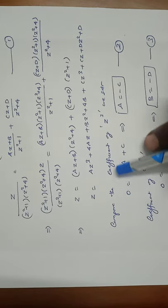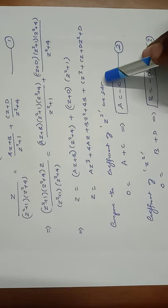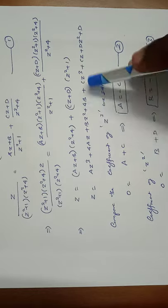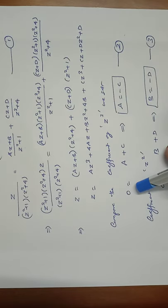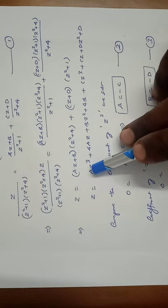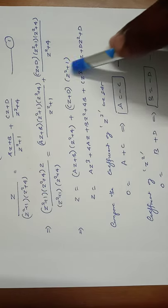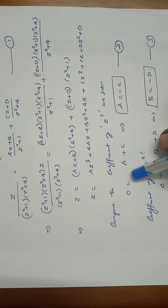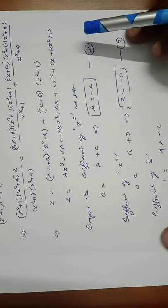Comparing coefficients of z³ on both sides: the left-hand side has no z³ term, so the coefficient is 0. On the right-hand side, the coefficient of z³ is A + C. Therefore A + C = 0, which gives A = −C. This is equation number 2.